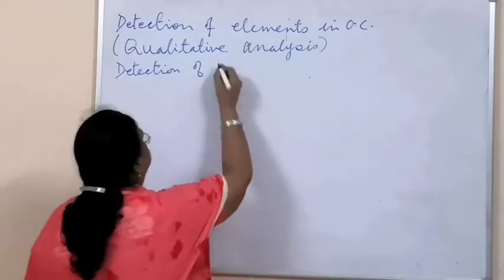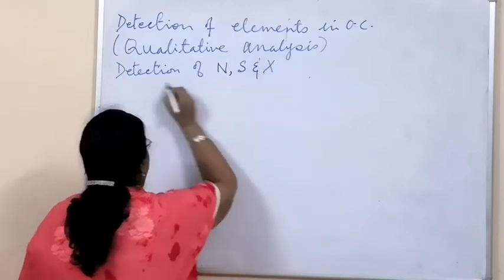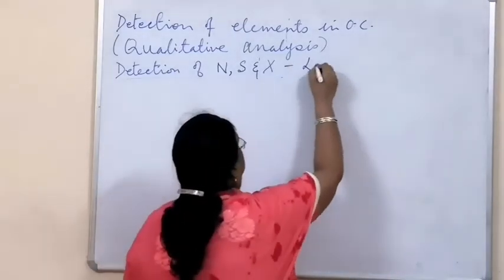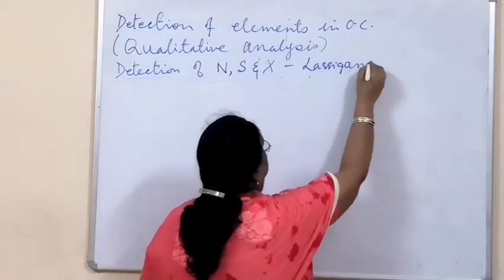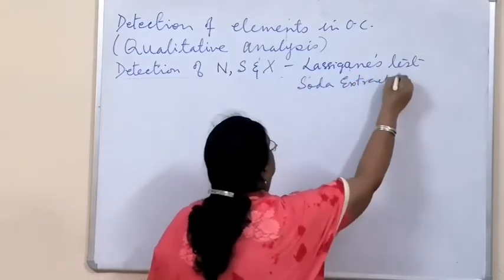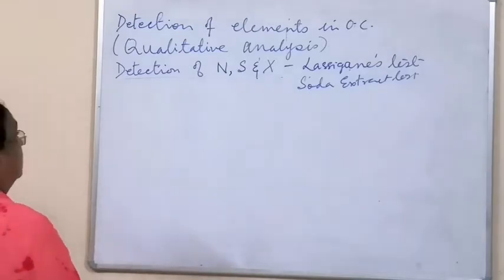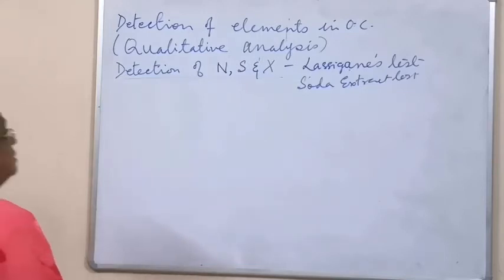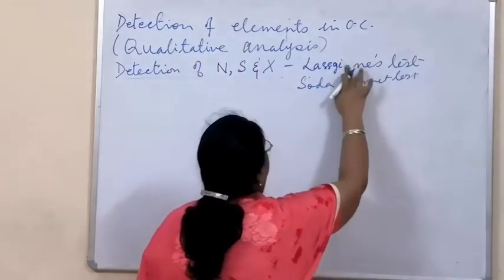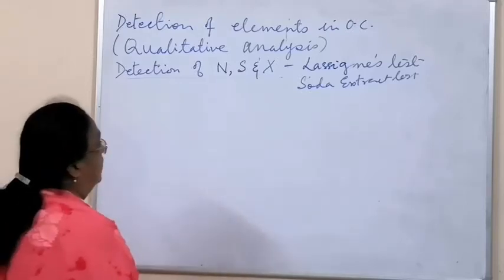For detection of nitrogen, sulfur, and halogens, there are different methods, but in your syllabus a test called the Lassaigne's test — also called the soda extract test — is mentioned.